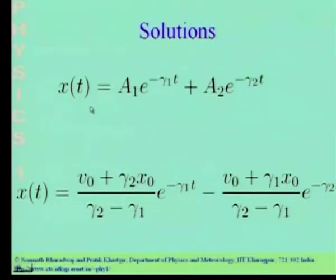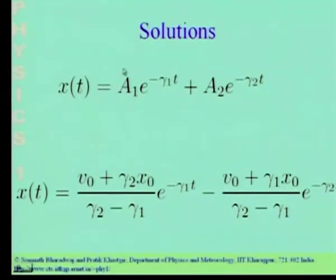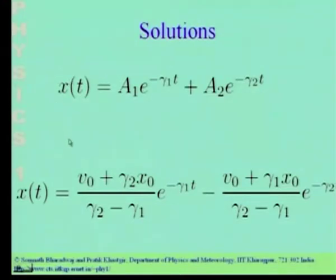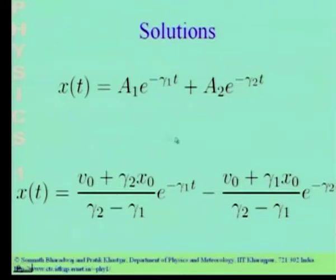This is the general solution for an over-damped oscillator with two unknown coefficients A_1 and A_2. Just as for the under-damped oscillator, you can set t = 0, equate to the initial position x-naught, differentiate to get an expression for velocity, set t = 0 and equate to v-naught, then solve for A_1 and A_2. The resulting expression for x(t) in terms of initial conditions follows from straightforward algebra.